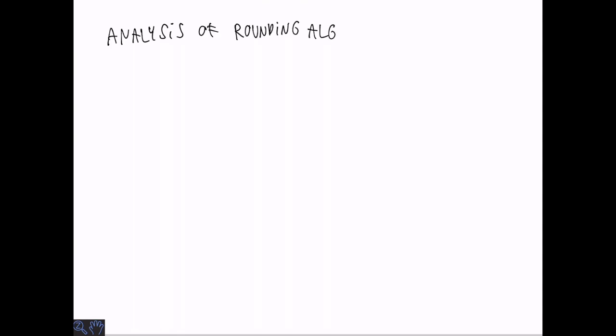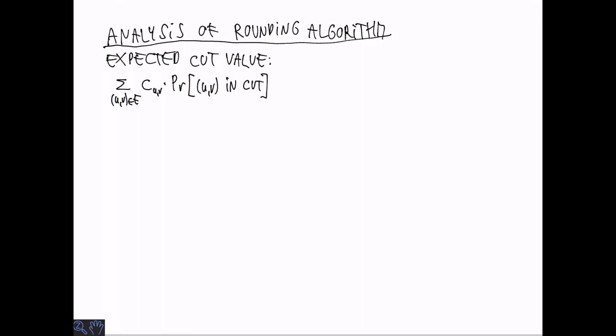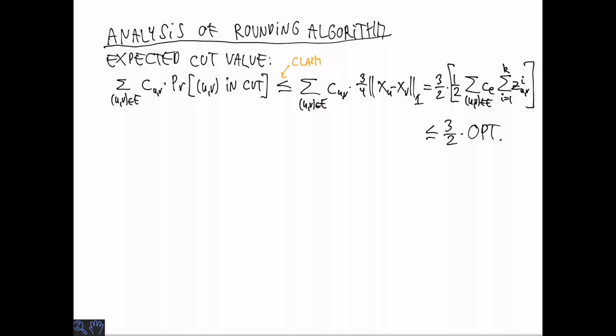In order to analyze the randomized rounding algorithm, we write the expected cut value as the sum over all edges of the weight times the probability that this edge is cut. I am going to claim that this probability can be upper bounded by 3 quarters of the L1 distance between xU and xV for an edge u to v. If we take this for granted, we are done. The L1 distance can be written in terms of the objective function of the linear program, which is a lower bound on the optimal value of the integer program.